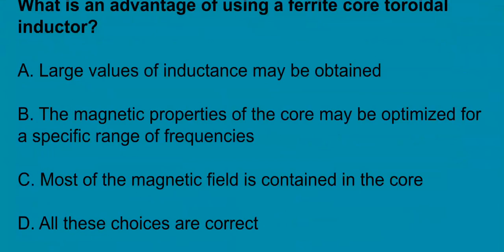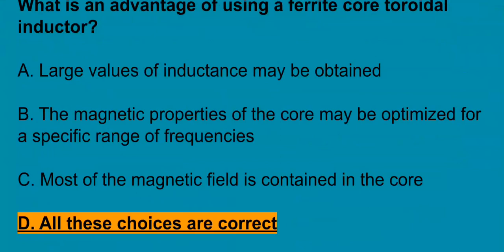G6B05, what is the advantage of using a ferrite core toroidal inductor? And all of these are correct. So, large values of inductance may be obtained, the magnetic properties of the core may be optimized for specific frequency range, and most of the magnetic field is contained in the core.